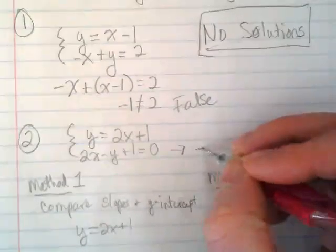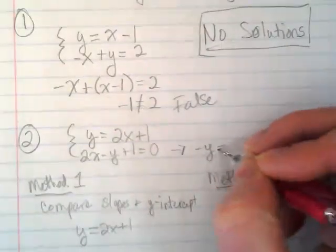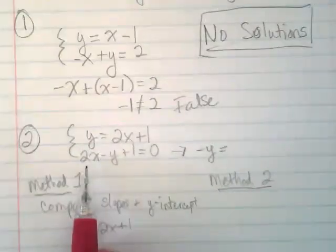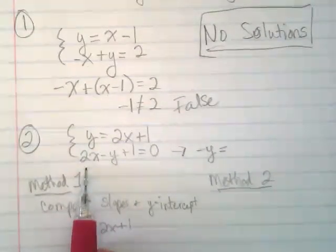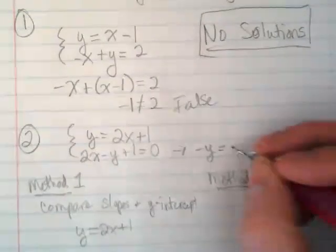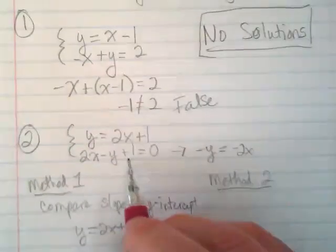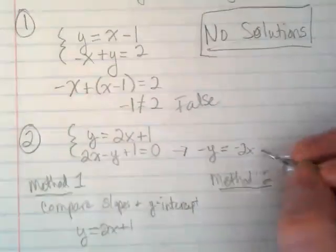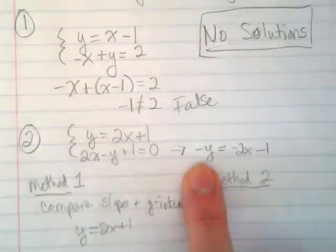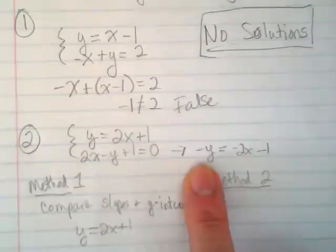We're going to get negative y is equal to, this is a positive 2x, so when I move it to the other side, it's going to become negative. This plus 1 is going to become negative, but what was the case with my y? It's negative.